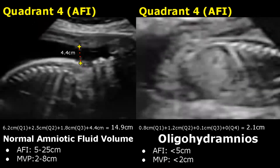The last measurement is taken in the fourth quadrant. It is 4.4 cm in the normal image. In the Oligohydramnios image, we do not see any fluid in the fourth quadrant, so the Q4 value is 0.